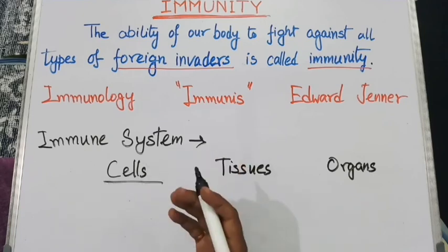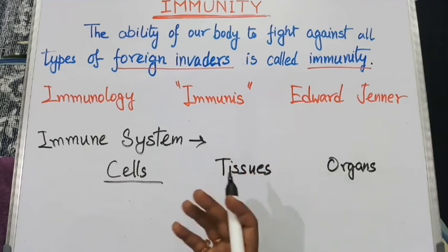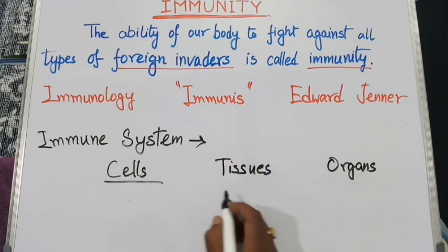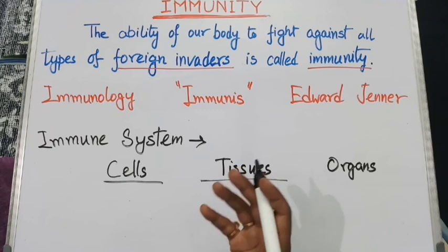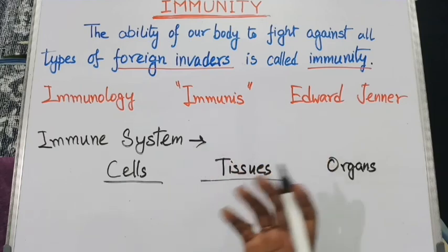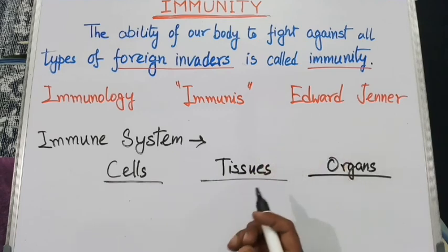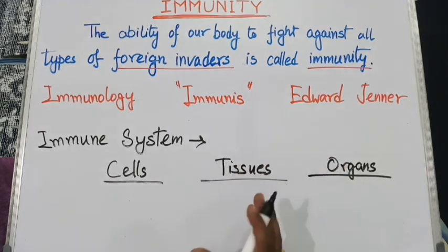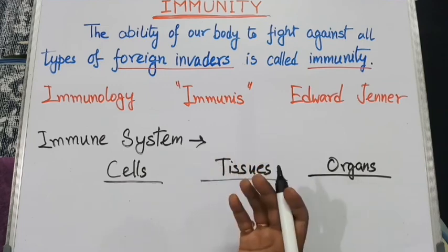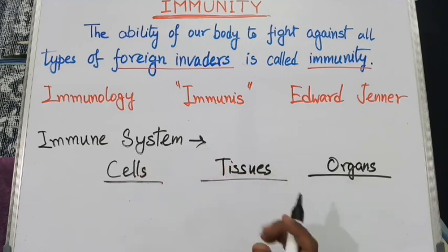Here, different types of cells means different types of WBC like neutrophils, monocytes, lymphocytes, macrophages, etc. Different types of tissue means different types of lymphoid tissue, lymph nodes, bone marrow, etc. And different types of organs such as spleen, tonsil, thymus, etc. — all together act coordinately to build our immune system.